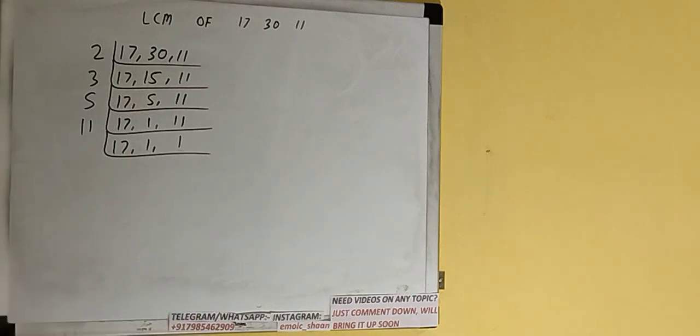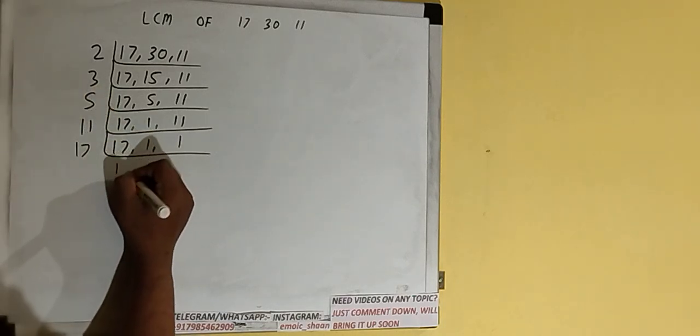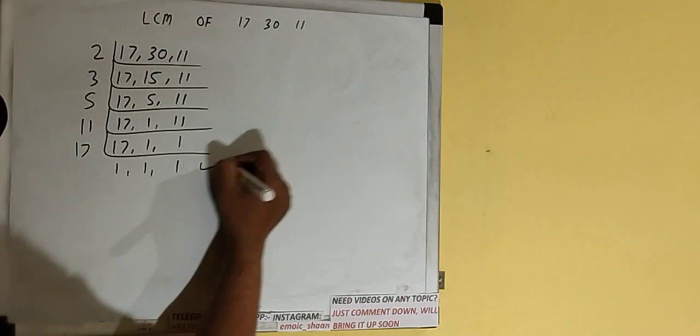None of the numbers are divisible by 11 either, so we check with the next lowest one, which is 13. With 13 also, none of the numbers are divisible, so we check with the next one, which is 17. This number is divisible by 17, so we divide and we get all 1s. Once we get that, we need to stop.